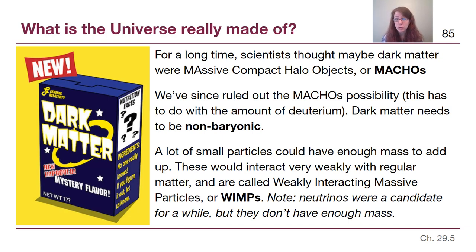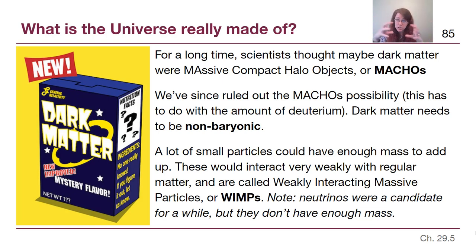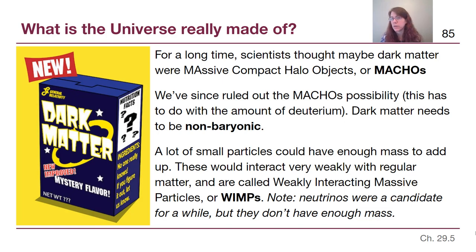No one really knows exactly what dark matter is, and it's a lot easier to say what it isn't. For a long time, scientists thought that maybe dark matter was brown dwarfs, rogue planets, and black holes — objects that just don't shine. These would have mass and be compact objects out in the halo of the galaxy, so scientists called them massive compact halo objects, or MACHOs. Unfortunately, we've ruled out MACHOs as the answer, having to do with the amount of deuterium — a specific isotope of hydrogen — that exists in the universe. The idea was thrown out because it did not fit the observations, just as we have to do in science.